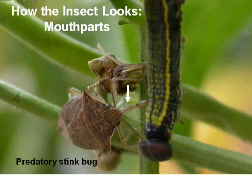Mouth parts can be very important in identification. Here we know we have a bug because of the piercing-sucking mouth parts. What's interesting is that not only do we know we have a bug, but because of the fatness and thickness of the beak, we can tell this is a predatory bug. Of course, the fact that it's feeding on a caterpillar also helps confirm it's predatory. Even though it looks an awful lot like a brown stink bug feeding on a plant, this is actually a helpful creature rather than a harmful one.